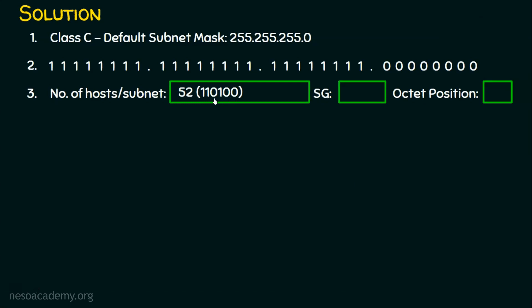How many bits are required in binary to represent 52? We need six bits compulsorily — without six bits we can't get the number 52. So this six-bit count plays a vital role. Now, to generate the subnet generator and octet position, we take the class C subnet mask and reserve six zeros from the right.